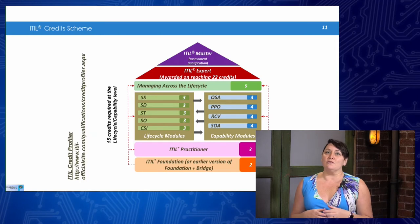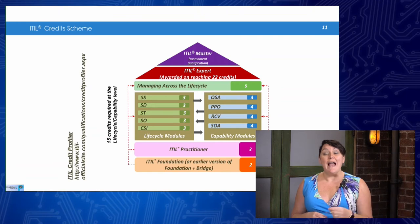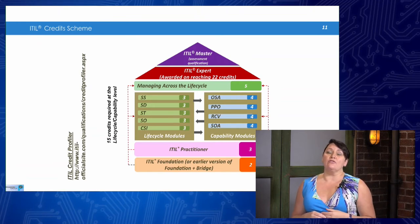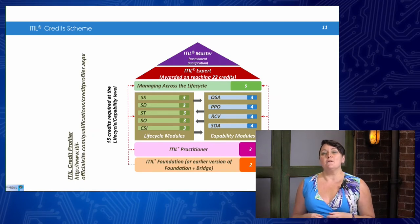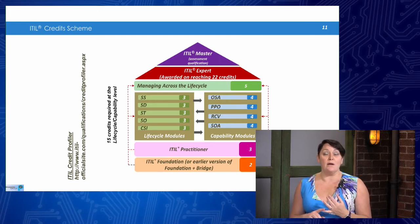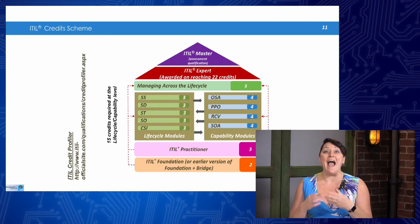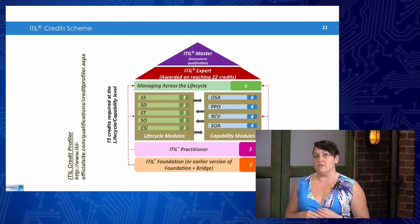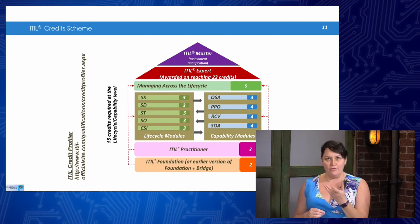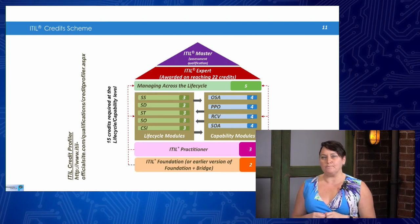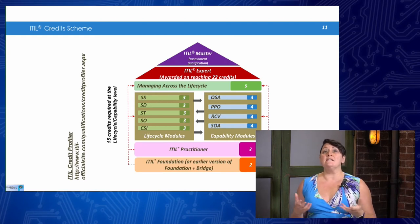You can interchange and mix and match — you do not have to stick to one stream or the other. Once you've got the 17 credits total needed to sit managing across the lifecycle, you're perfectly able to sit that class and take that test. As soon as you've taken that test you will be awarded five credits, meaning you have achieved ITIL expert. ITIL expert is allocated as soon as you have passed the managing across the lifecycle test and achieved 22 credits — both of those must happen.